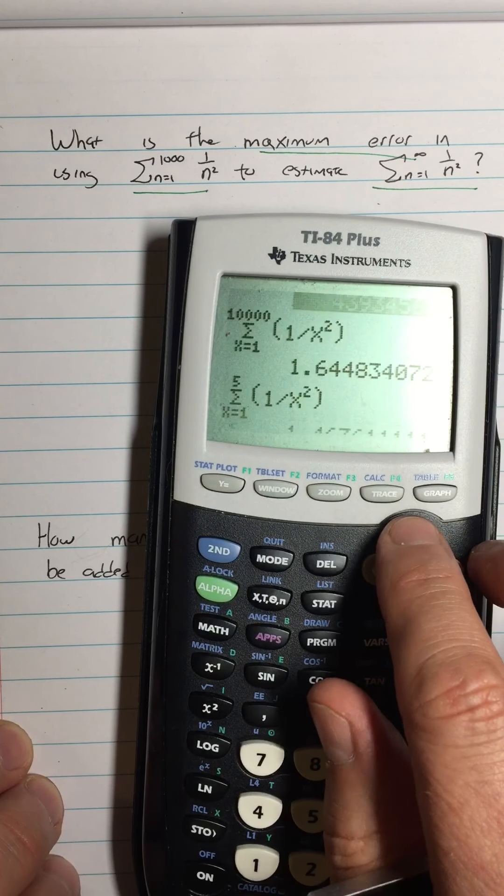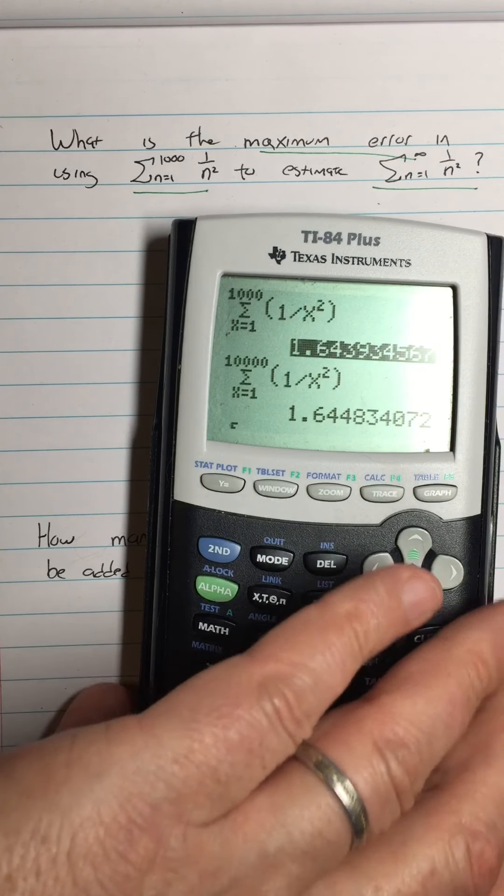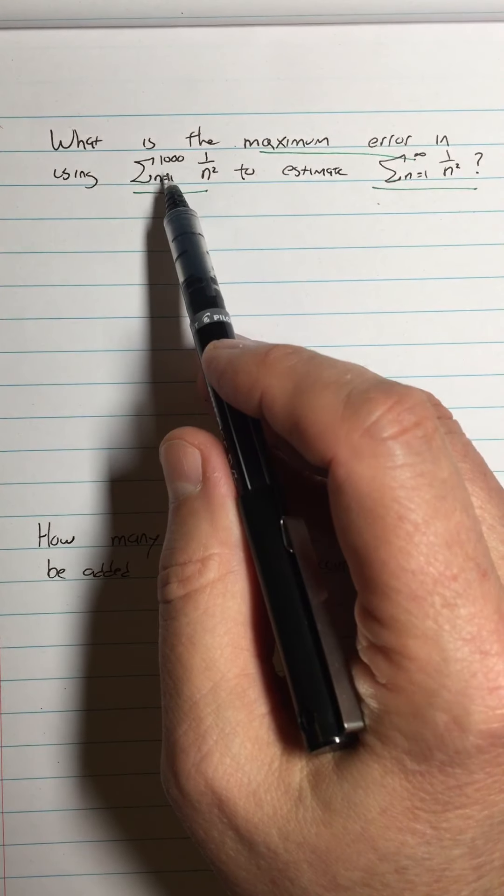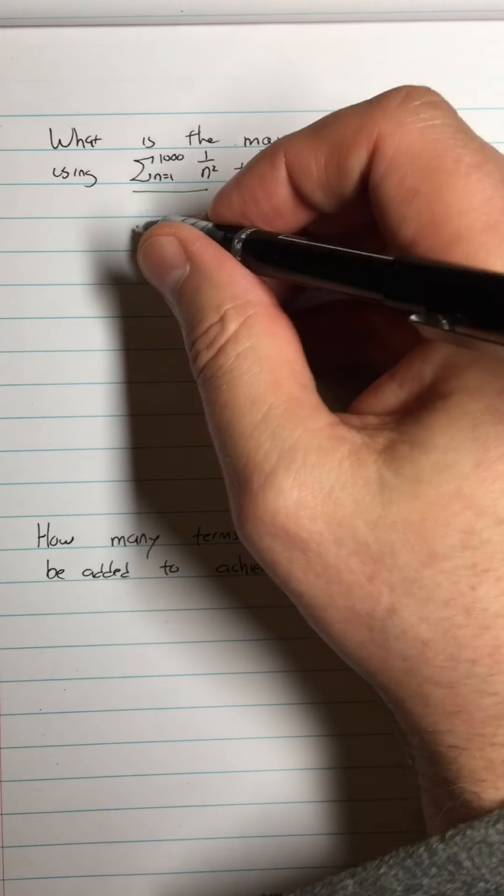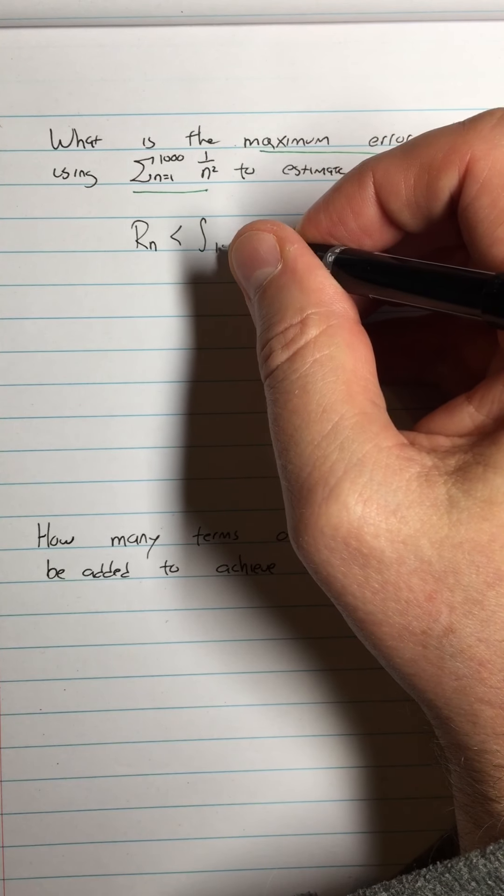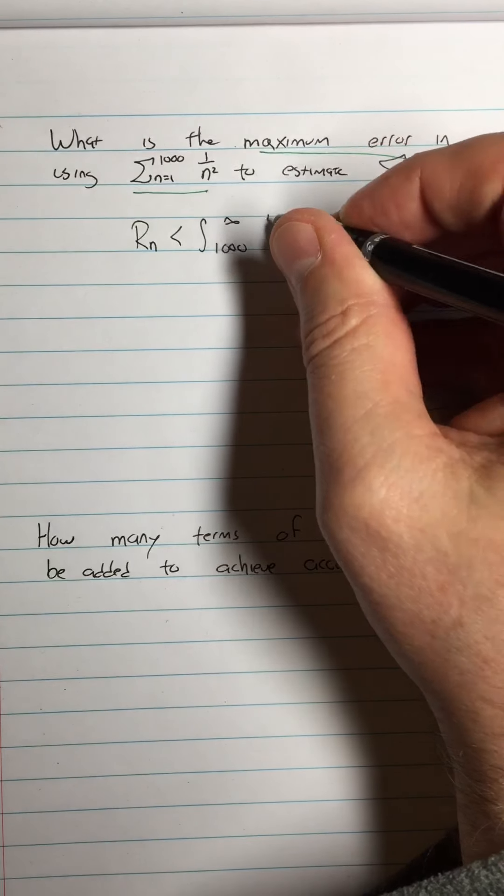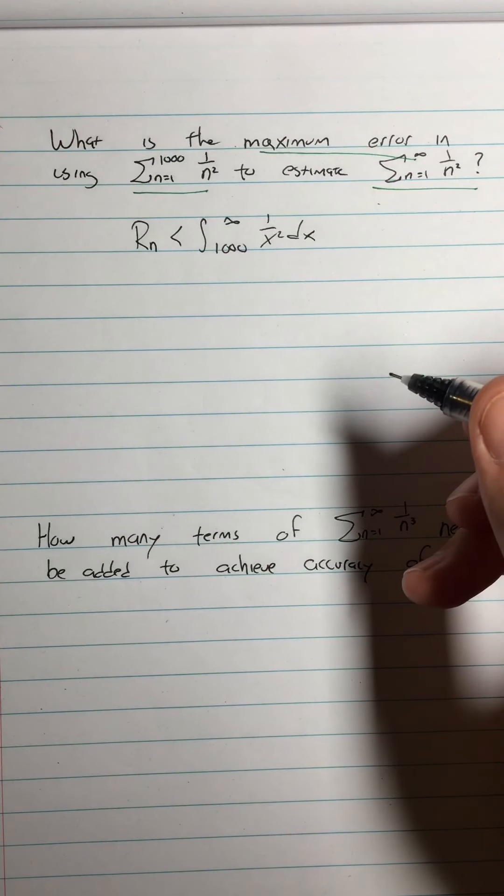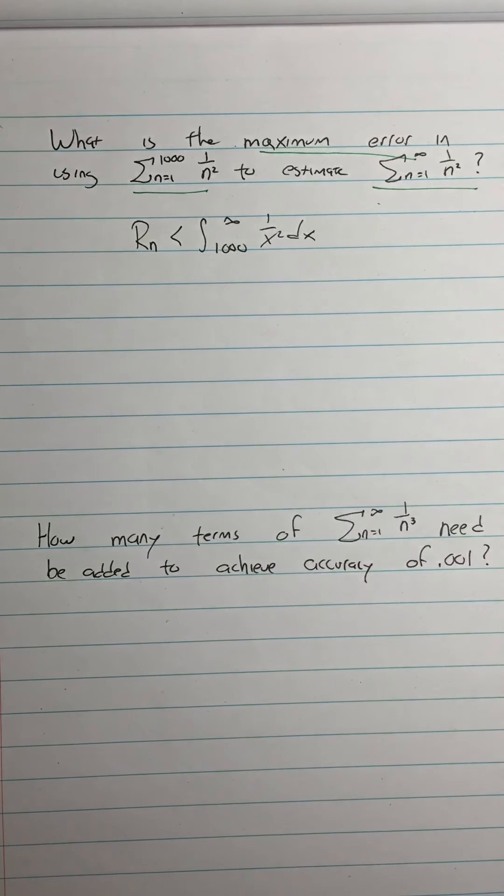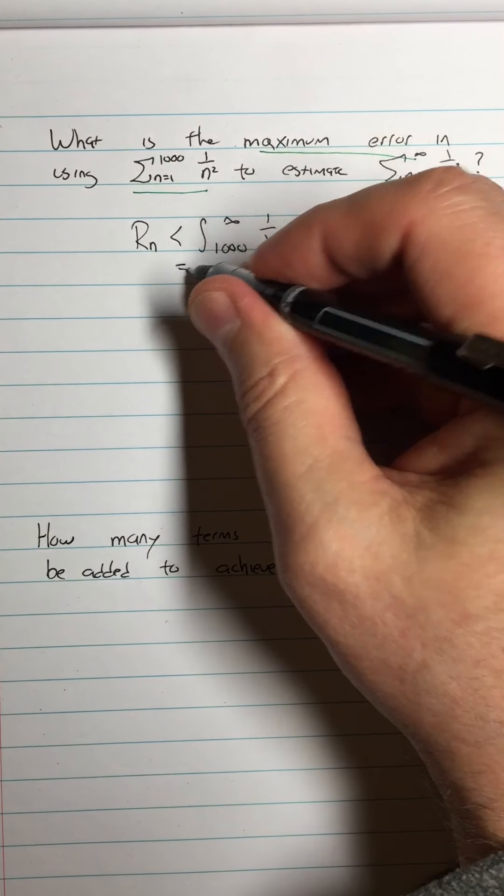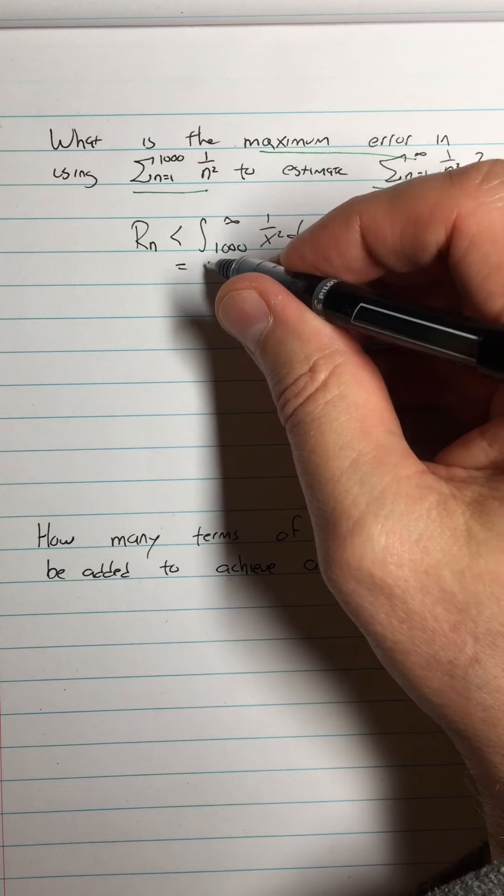So we did sum n equals 1 to 1,000 of 1 over n squared. Now it's up here. Here it is right there. That's 1.643 blah, blah, blah. Well, how close were we when we summed up 1,000 terms? Well, now we know how to do that. We know that the error had to be less than the integral from 1,000 to infinity of 1 over x squared dx. That's basically the part of the sum that we left out, or it's an upper bound for the part of the sum that we left out.